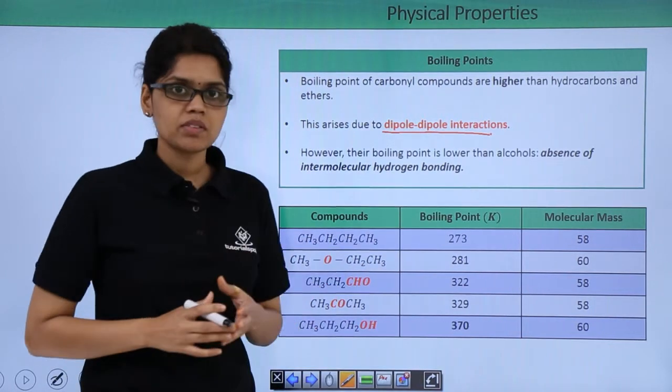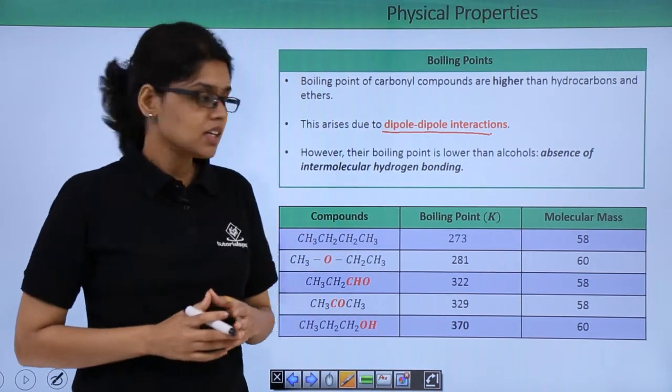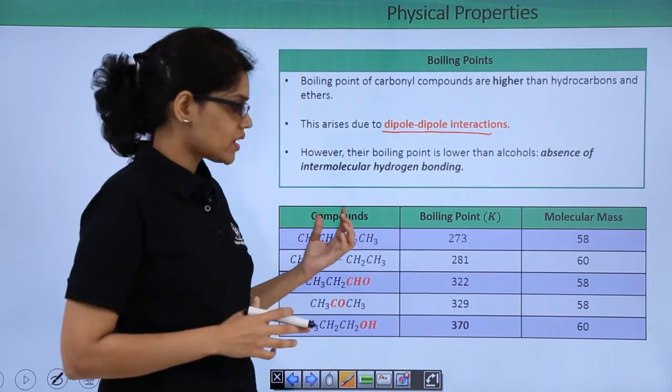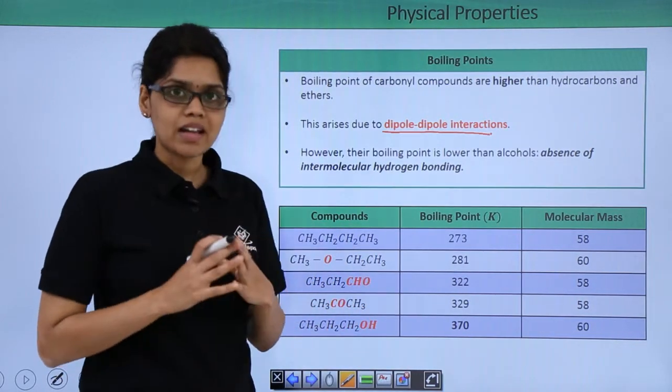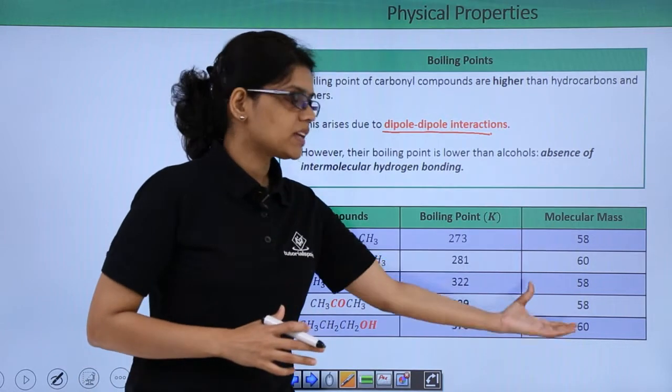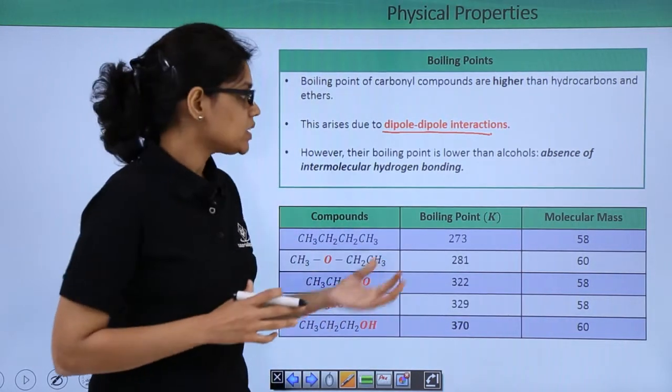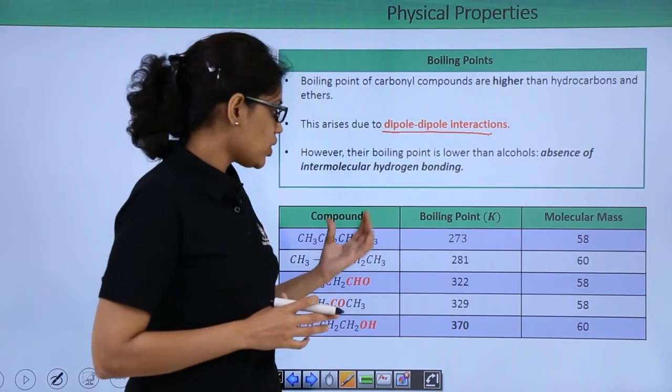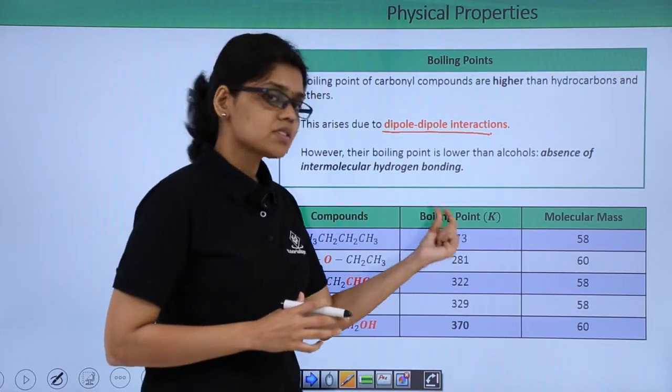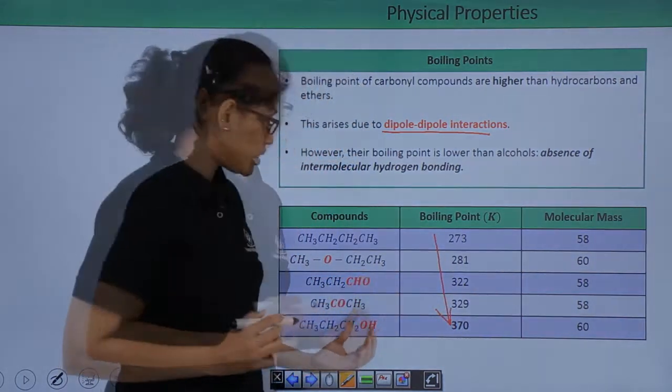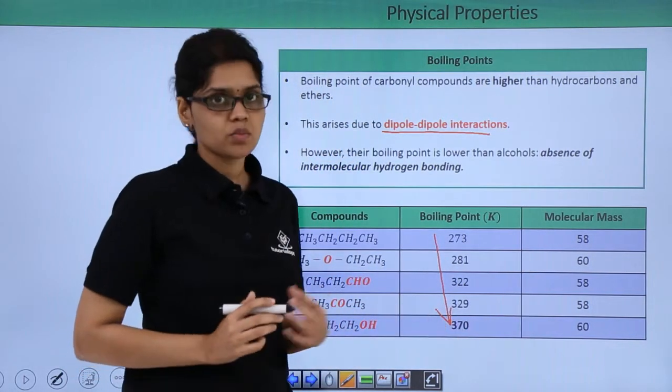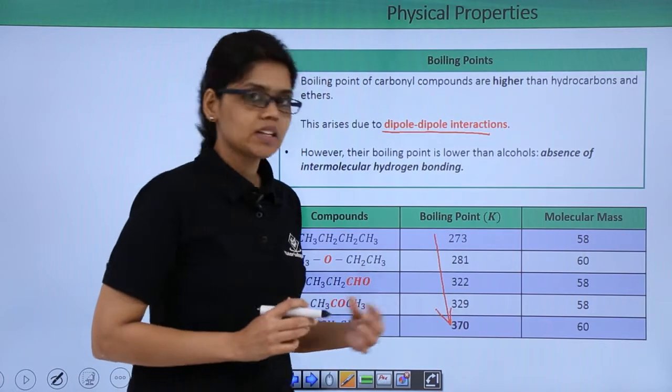Let's now look at this table which has a number of compounds. The first one is a hydrocarbon, second is an ether, then you have an aldehyde, ketone, and finally an alcohol all of approximately similar molecular mass. Now if you look at the boiling point you can see that boiling point of hydrocarbon is lowest which is 273 kelvins and it increases as we go down with alcohol which has the highest boiling point which is 370 kelvins.